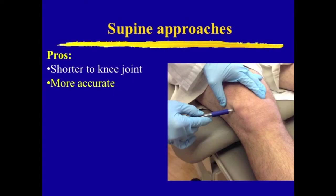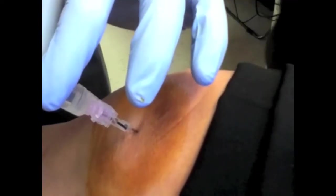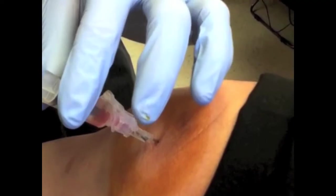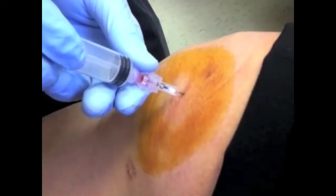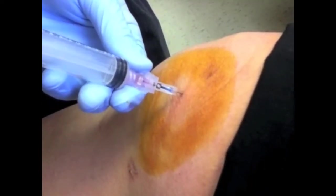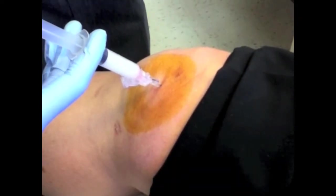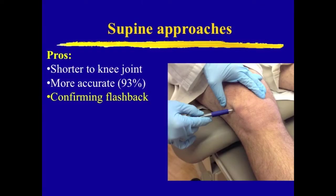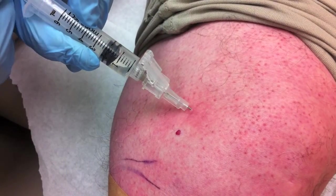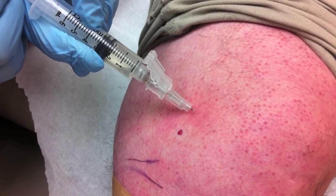Because of the anatomically shorter distance to the knee joint, another pro for the supine position is that providers can more accurately reach the knee joint space, especially in obese patients or patients with a large knee AP diameter. Besides the obvious advantage of delivering the medication to the right space, accurately reaching the knee joint can help decrease the risks of extra-articular deposits of steroid or hyaluronic acid. With the higher accuracy and relaxed knee of the supine approach, you are more likely to get a synovial flashback which confirms needle placement within the joint.